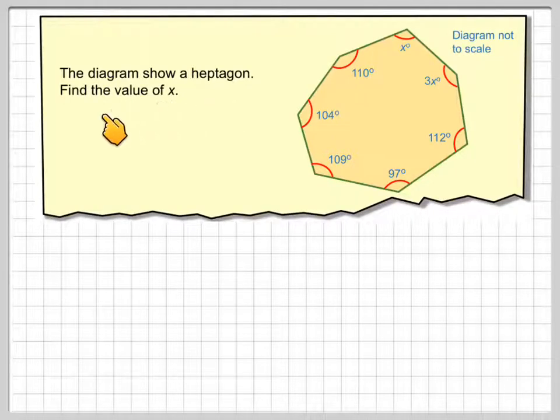The diagram shows a heptagon, so let's find the value of x. We've got x here and we know this one here is also 3x. Notice the diagram is not drawn to scale.